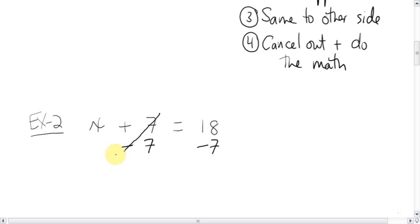Third step, do the same to the other side. Subtract 7. This then cancels out. If you want to be extra violent, you can double slash it out. What are you left with? The x wanted to be by itself and now it is by itself. x is equal to 18 minus 7 is 11. So, x is 11.